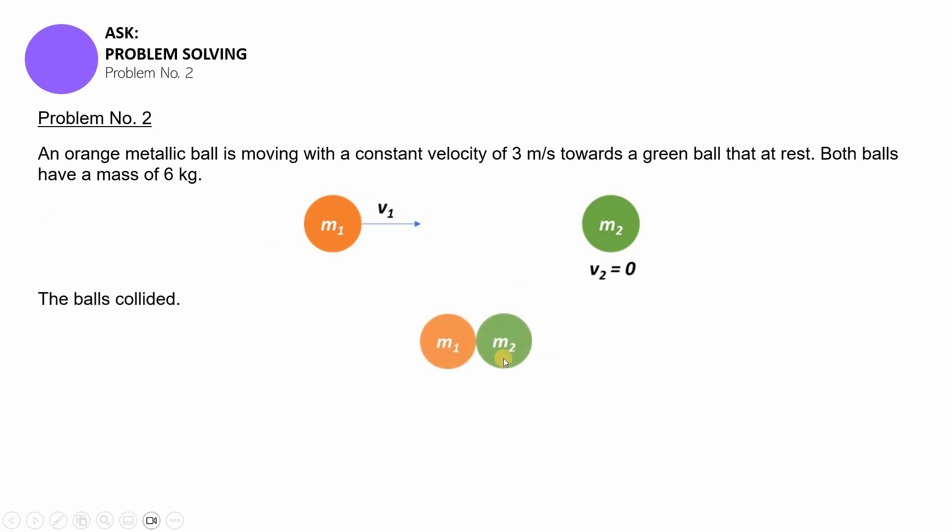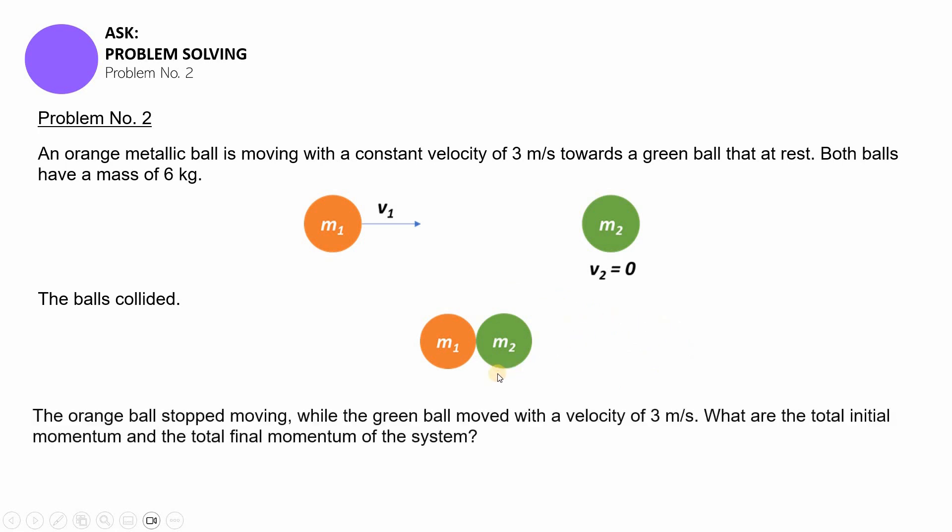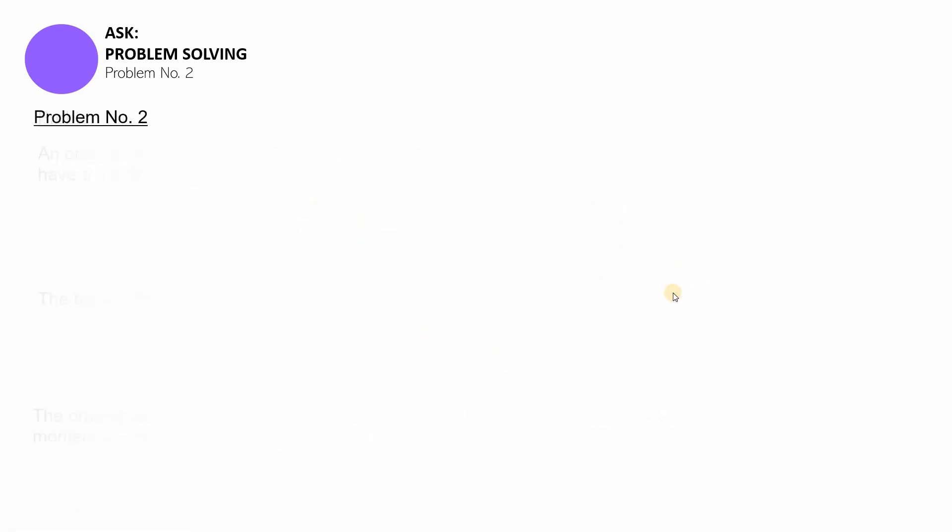Now, they collided and they look like this. Now, what happened after the collision was the orange ball stopped. And then, yung green ball naman, nag-move siya with a speed of or velocity of 3 meters per second. So, yes, it's similar to sample problem number 2 a while ago. Now, let's see. Ano kaya yung total initial, total final momentum ng system na to?